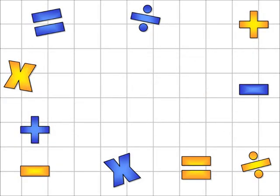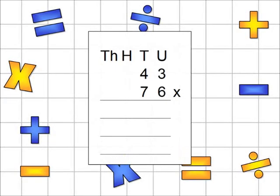Let's try a new question. In this question, you will need to multiply a two-digit number by another two-digit number: 43 multiplied by 76.